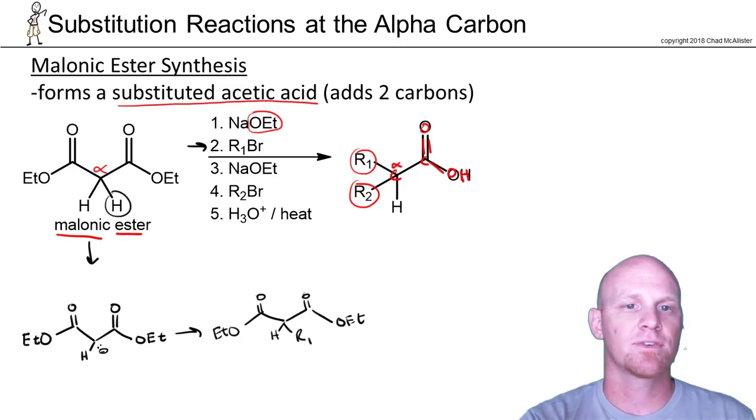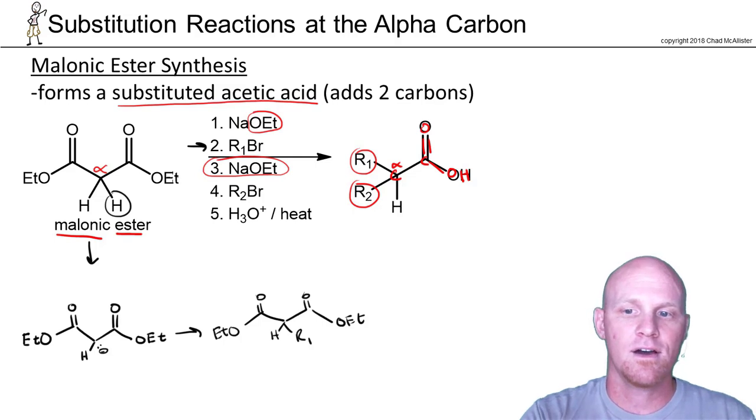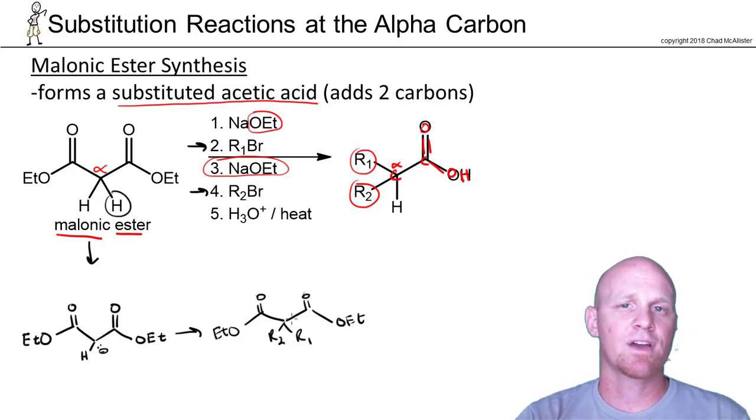Then we do the same sequence of steps over again. We'll add sodium ethoxide again in step three—that'll deprotonate the other H—and then we'll add another alkyl halide to replace that H. In this case, we're going to get rid of this H and add that second R group here, getting us here. We have the option: we don't actually have to replace both H's, we could just replace one of the two. It's our choice.